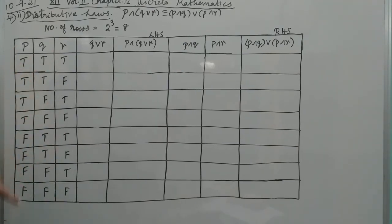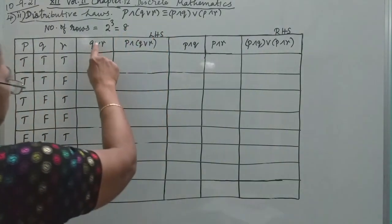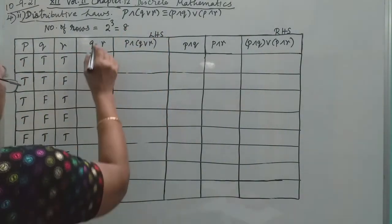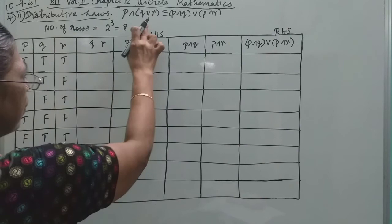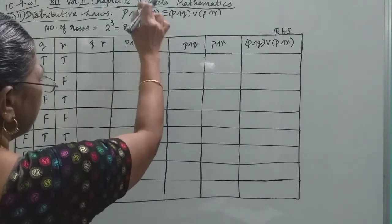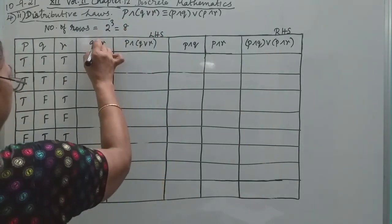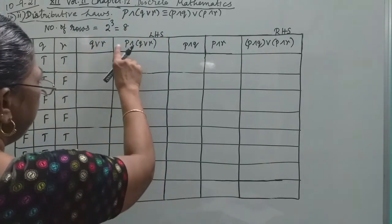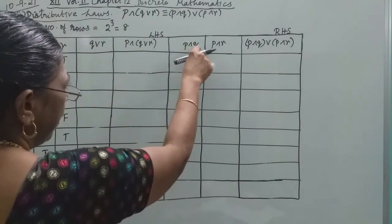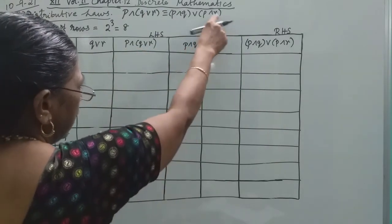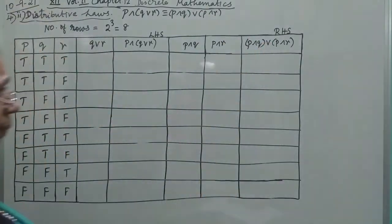You can use P cap of Q cup R. In the previous video, we had P cap of Q cup R. This is cap only. Now, P cap of Q cup R — here is P cap of Q cup R, and here is P cap R, and here is a cap.